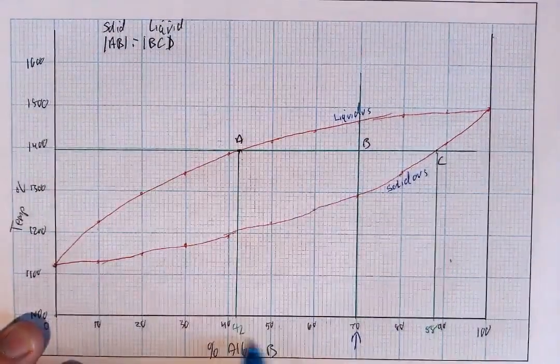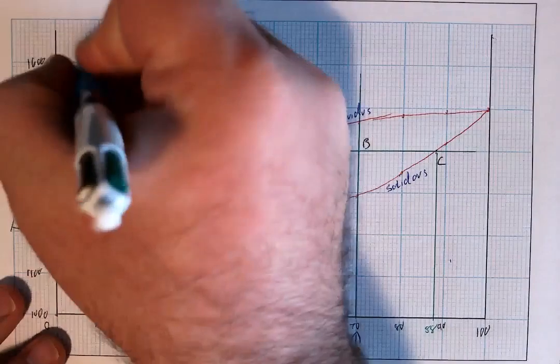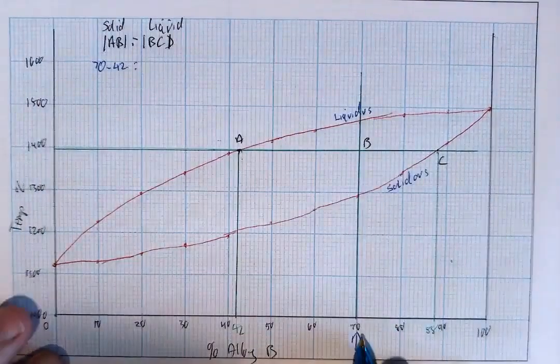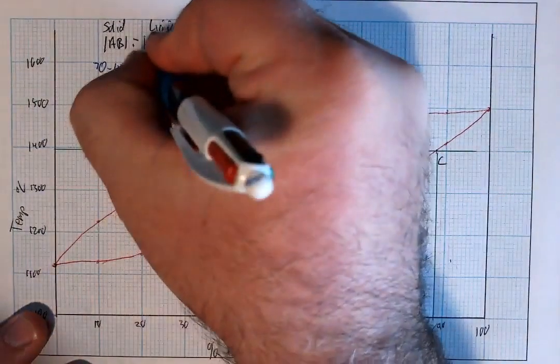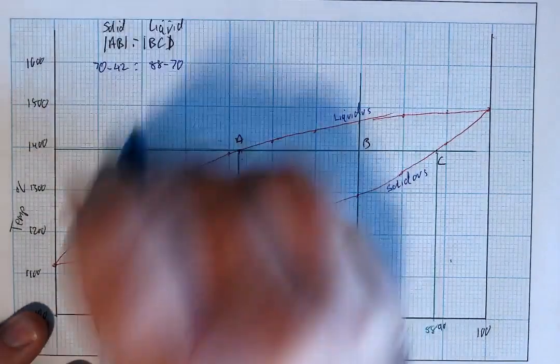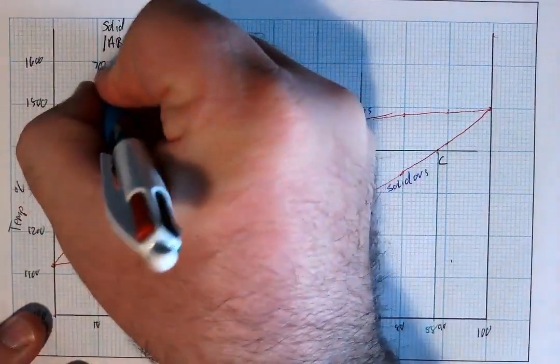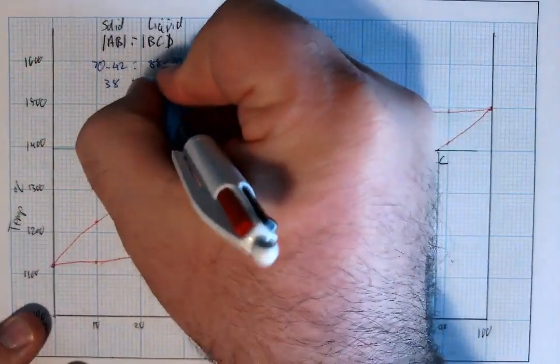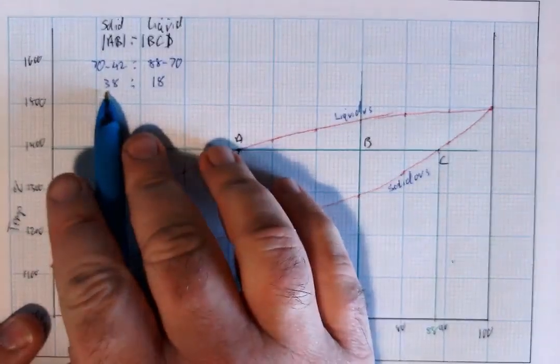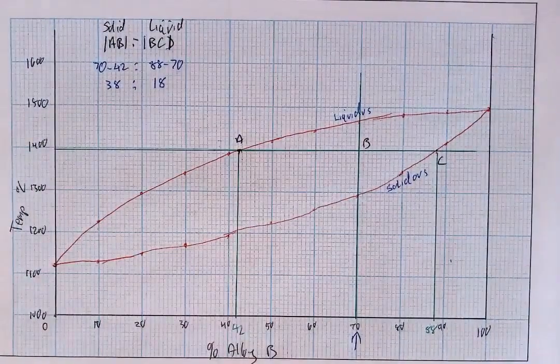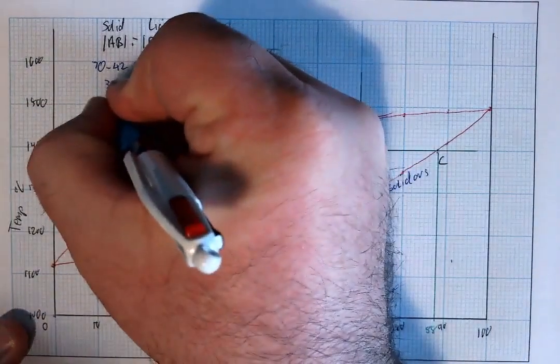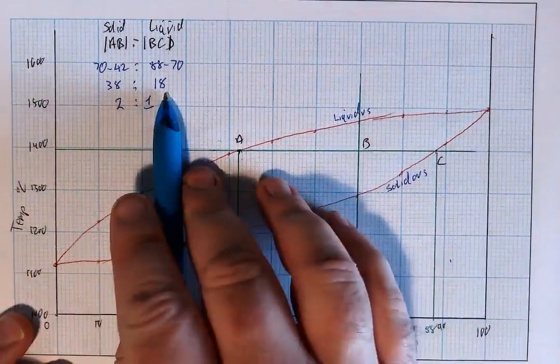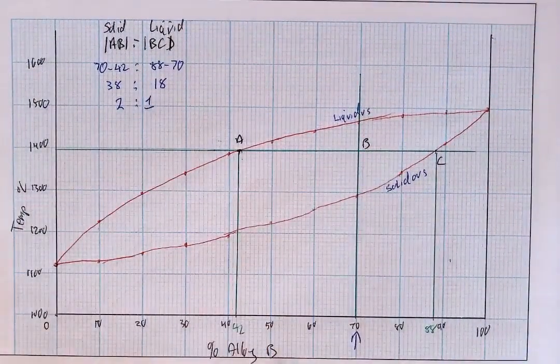So my ratio of solid to liquid is 70 minus 42 to 88 minus 70. So that is 38 to 18. So the ratio there is 38 parts solid to 18 parts liquid, and that is approximately 2 is to 1, approximately because 40 to 20.